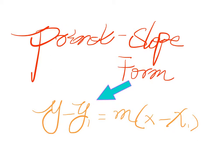The point-slope form is y minus y1 equals m times x minus x1.